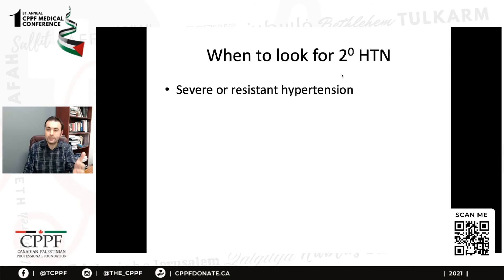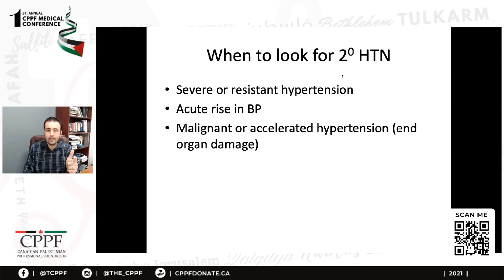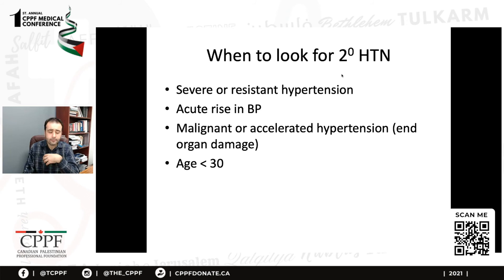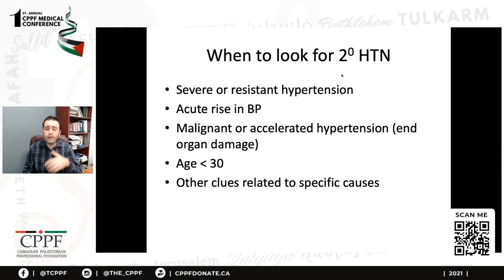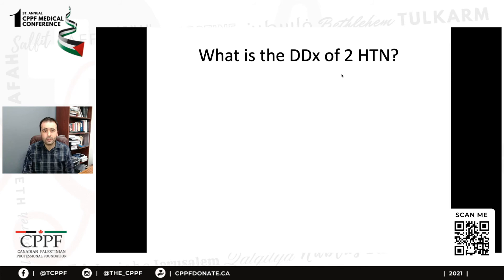Consider secondary hypertension when you have malignant or accelerated hypertension — blood pressures above 180 to 200 systolic with end-organ damage such as acute kidney injury, pre-stroke, or acute coronary syndrome. Particularly young patients should prompt consideration of secondary hypertension. Other clues related to a specific cause include a patient who is a loud snorer or obese, which makes you think of obstructive sleep apnea — you should have a low threshold to consider that.